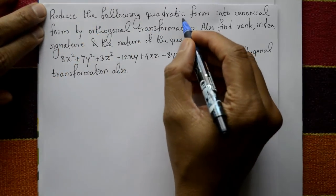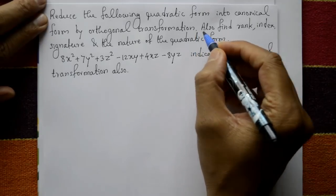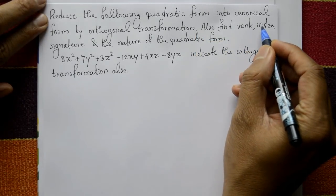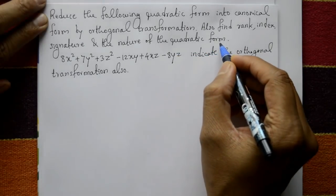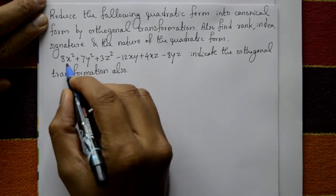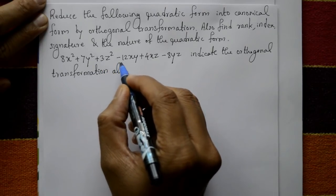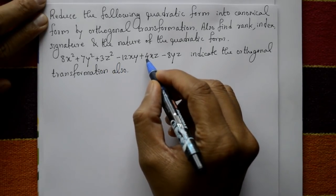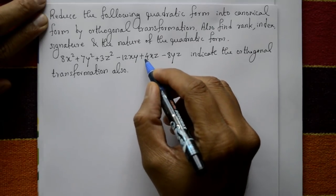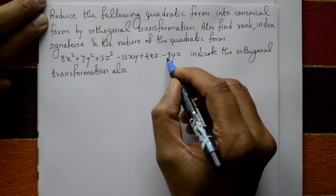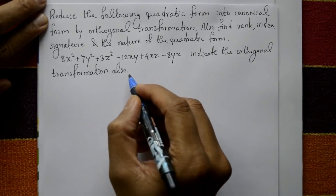Reduce the following quadratic form into canonical form by orthogonal transformation. Also find the rank, index, signature, and the nature of the quadratic form. The equation is given: 8x² + 7y² + 3z² − 12xy + 4xz − 8yz. We will indicate the orthogonal transformation also.